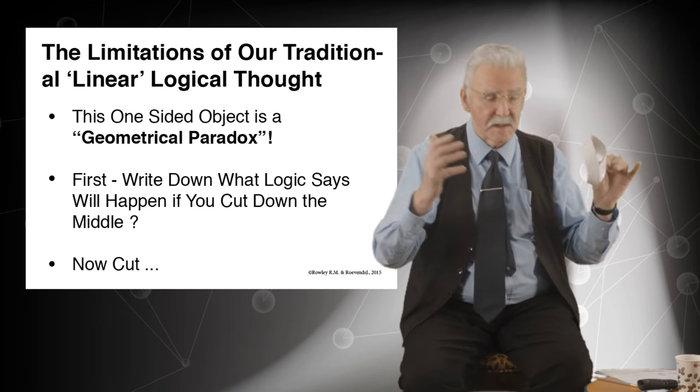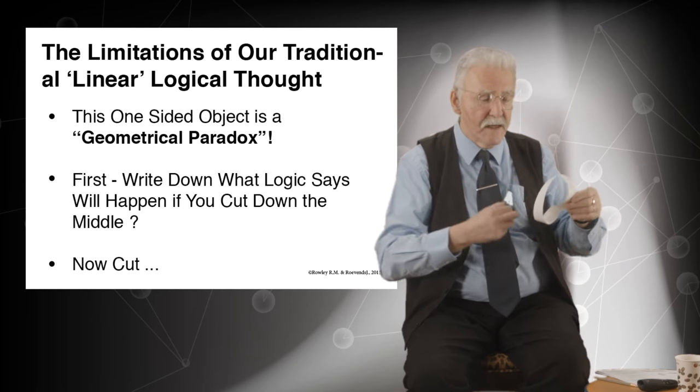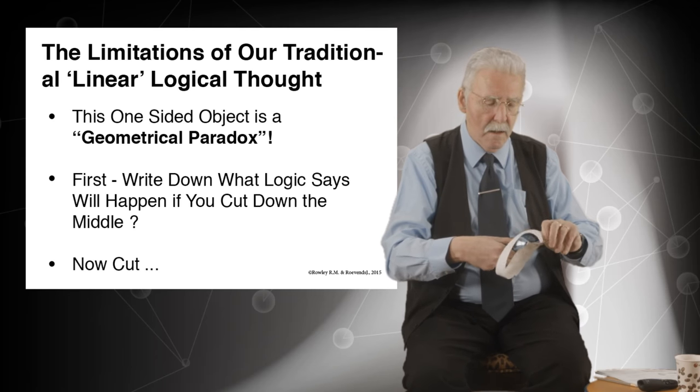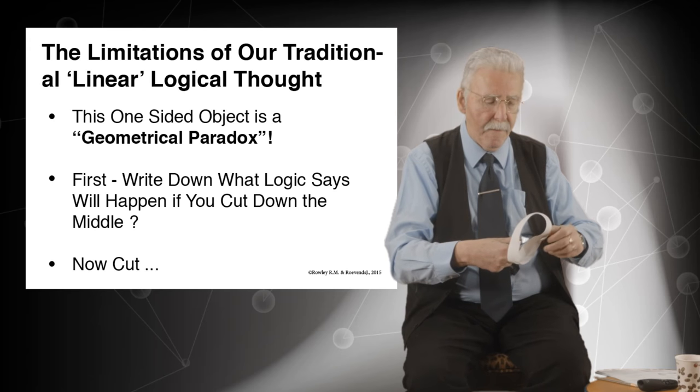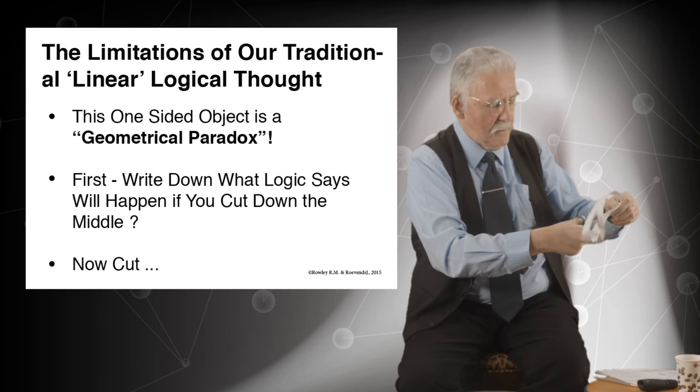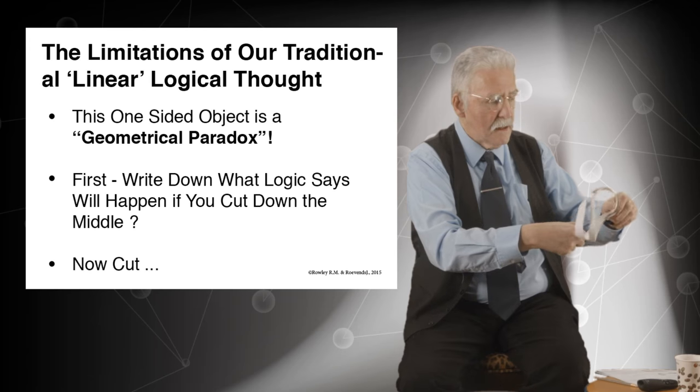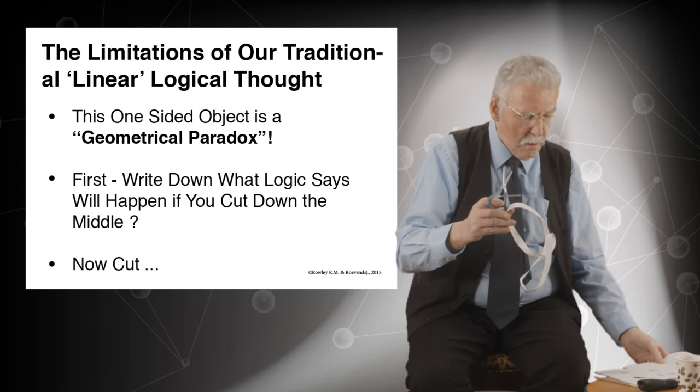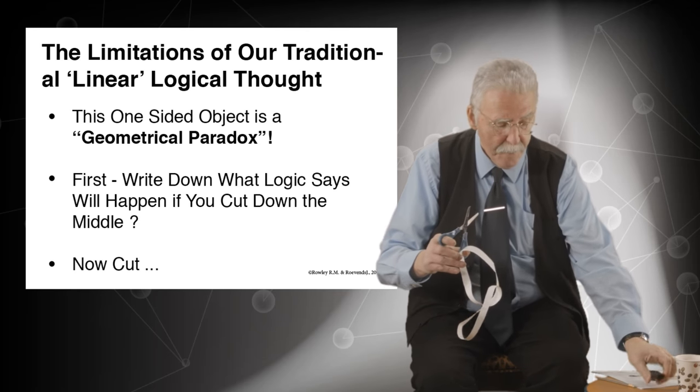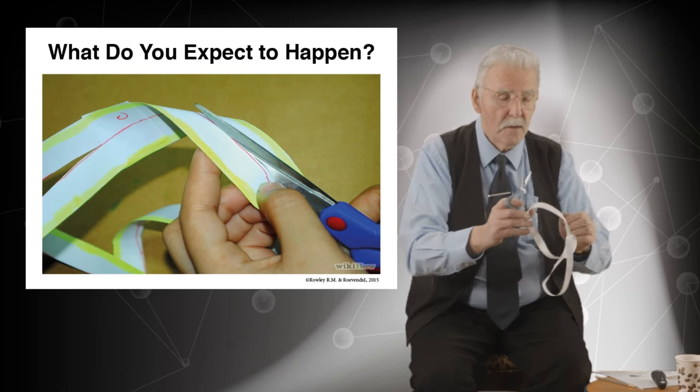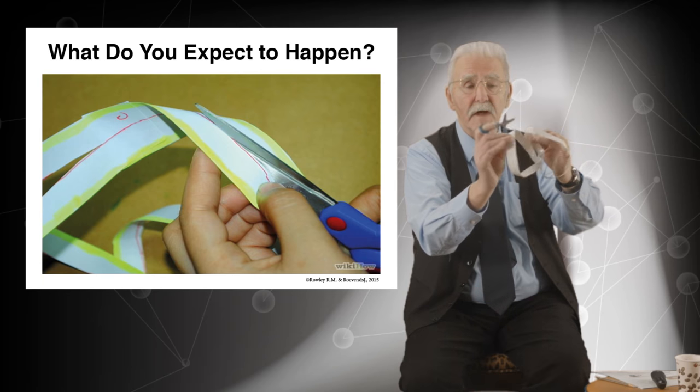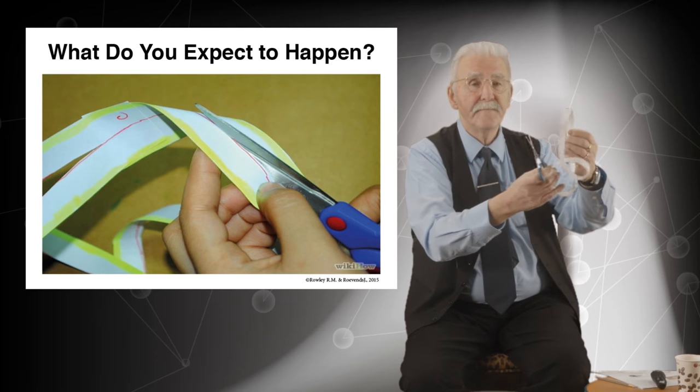Let's go a bit further. Take a pair of scissors and cut down the middle of this Möbius strip. We're cutting down our line here. I'm gonna save the last cut until the end. I haven't finished the cut yet. What does your logical mind say is going to happen on the last cut?